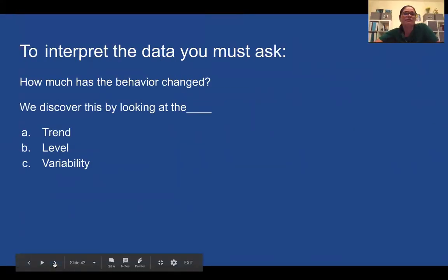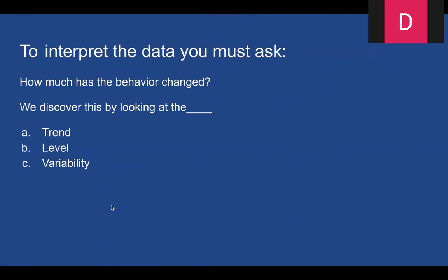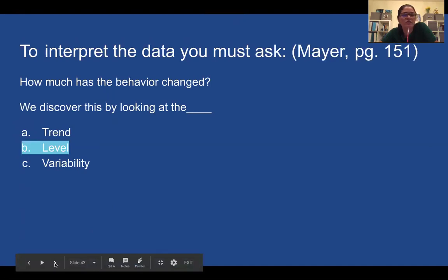To interpret the data you must ask: how much has the behavior changed? We discover this by looking at the trend, level, or variability. Level, trend, or level, trend. Two people said trend or three people said trend. Okay let's go to trend then. Oh, it was level. Wow, good job. Minerva is killing it today.